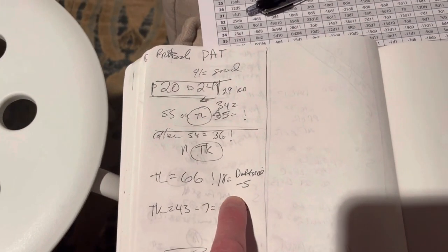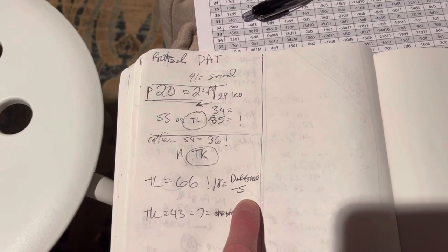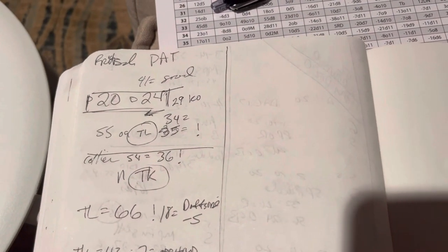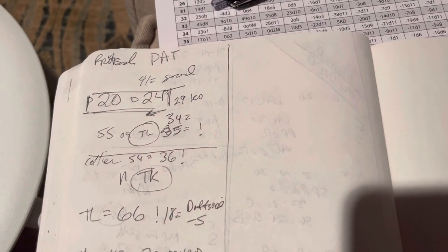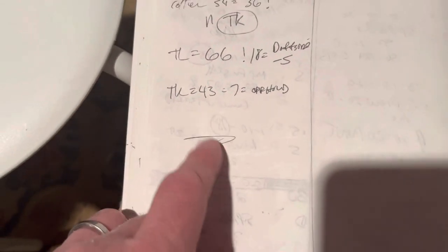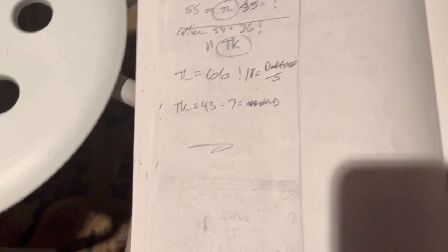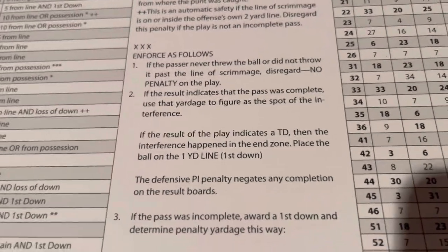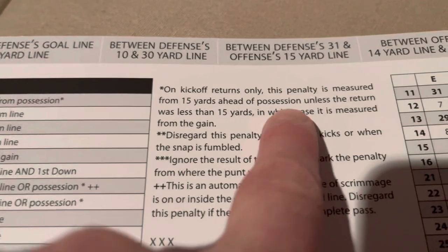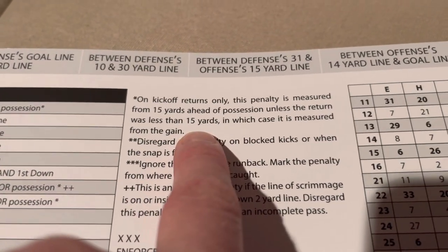And that's defensive. It was an 18 — 18L — he was offside, right? It was a defense offside on the defense. And then the Collier penalty was a TK 43, is a 7, which was holding on the offense. And since it's not a 15-yard gain — it was an 11-yard return — you'd assess that from the spot of the gain. It was a kickoff return less than 15 yards.